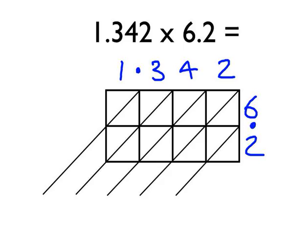we then draw a line down from our decimal point here. And then we draw a line across from our decimal point in the 6.2. And where those two lines meet, you follow the diagonal line down here. And so the decimal point in our answer will go here.